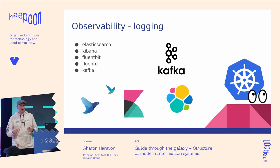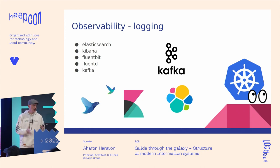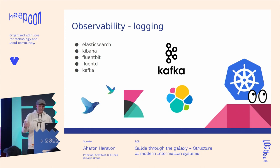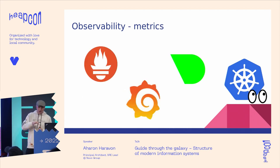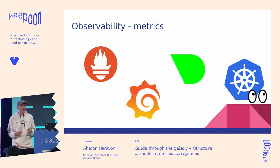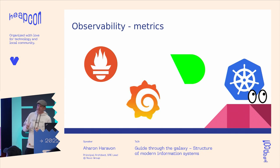The so-called EFK stack is sufficient to have complete in-cluster log shipping, transformation, storage, analytics, and alerting. Add Kafka to the mix to add better support for log amount peaks. Prometheus is pretty much the standard piece of Kubernetes to handle metrics, and Grafana is used to create beautiful dashboards over those metrics. Both tools have their own ways for creating alerts based on those metrics.